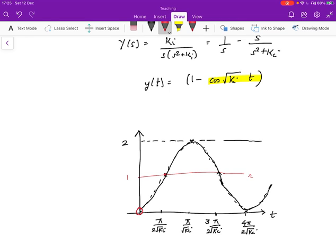And then when time is pi over square root ki, then it becomes one minus minus one, which is two. So we get this oscillation. That's what this amounts to.